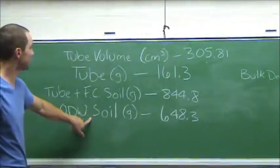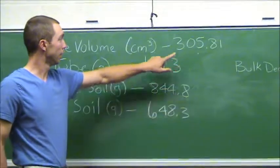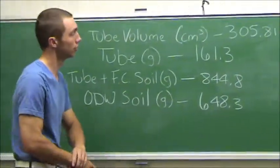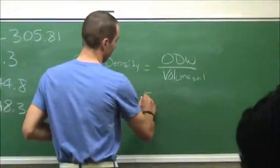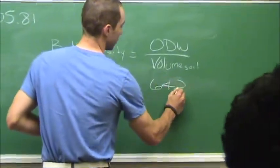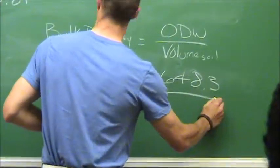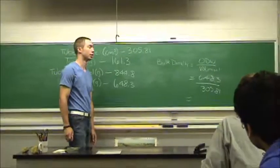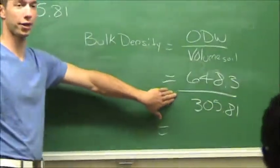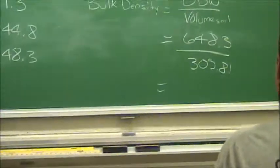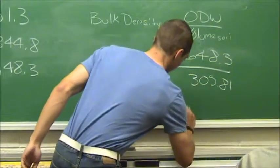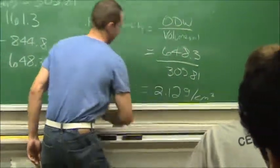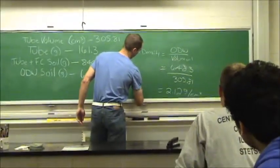So here's the oven dry weight we got from our soil: 648.3, and our volume for our tube is 305.81 cubic centimeters. Take 648.3 divided by 305.81. Does someone want to go ahead and calculate this out for me? Tom — 2.12. Wow, that was fast. We have 2.12 grams per centimeter cubed. That is our bulk density of our soil.